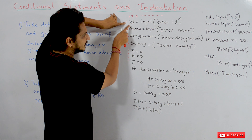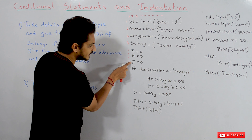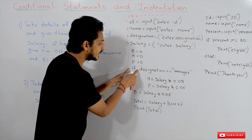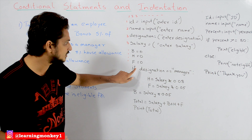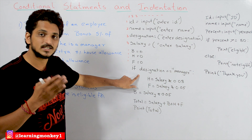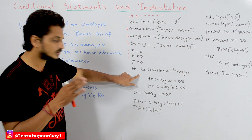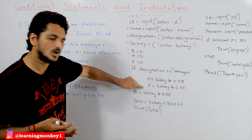Python executes line by line: first line, second line, third line, and so on. When it comes to the if condition and it is satisfied, it has to execute that block of code. But how will Python identify that those two lines belong to the if condition? That is why we need indentation. Python needs some way to understand that those two lines belong to the if condition. If you write those lines at the first column, Python cannot determine whether they belong to the conditional statement or not.